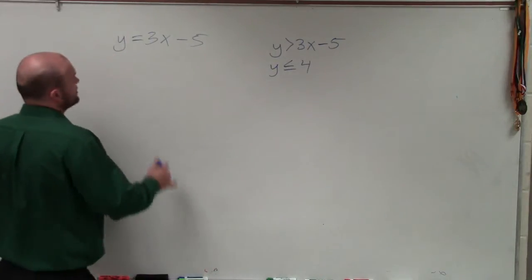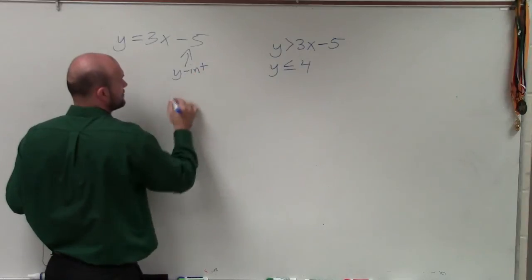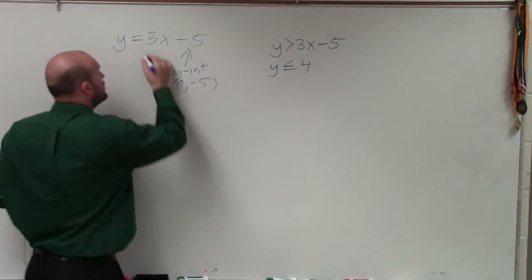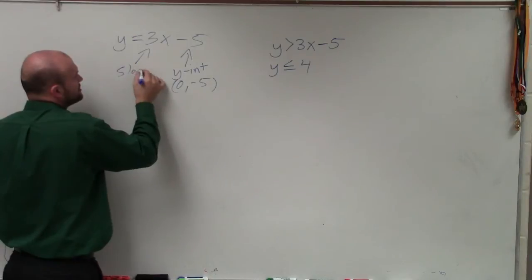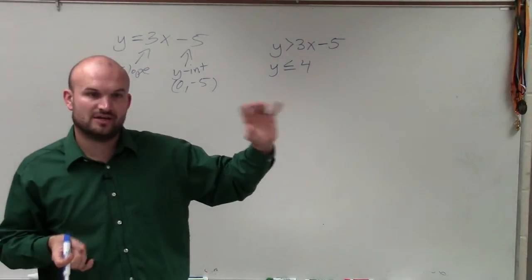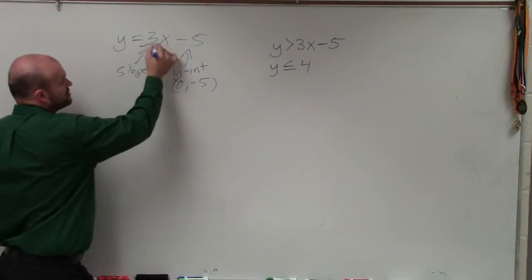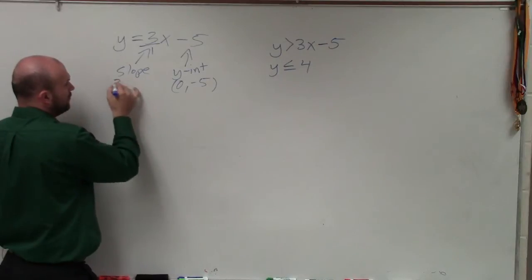The first point is this is going to be our y-intercept, which is a coordinate point, (0, -5). Where here is our slope, which is not a coordinate point, but is a ratio in the change in the y-values over the change in the x-values between any two points. And we always want to write our slope as a fraction. So I can rewrite any whole number over 1.